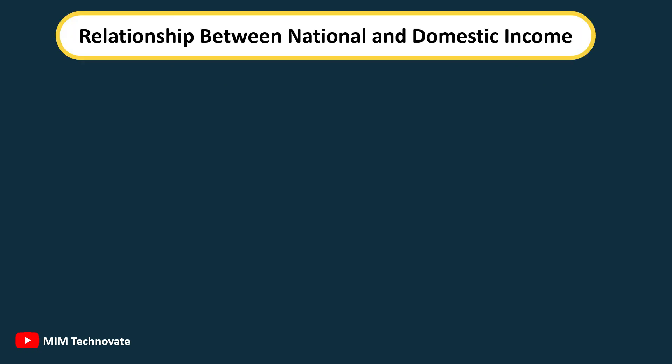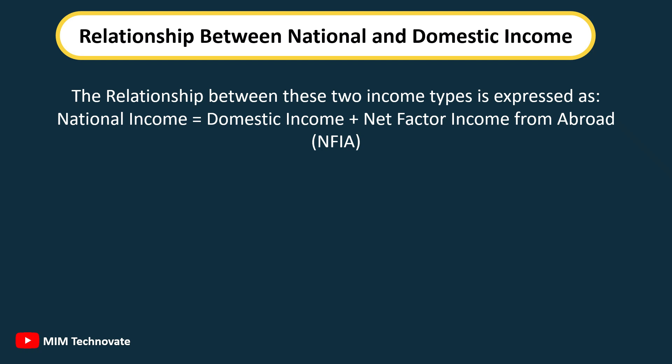The relationship between national and domestic income is expressed as: National Income equals Domestic Income plus Net Factor Income from Abroad, NFIA.